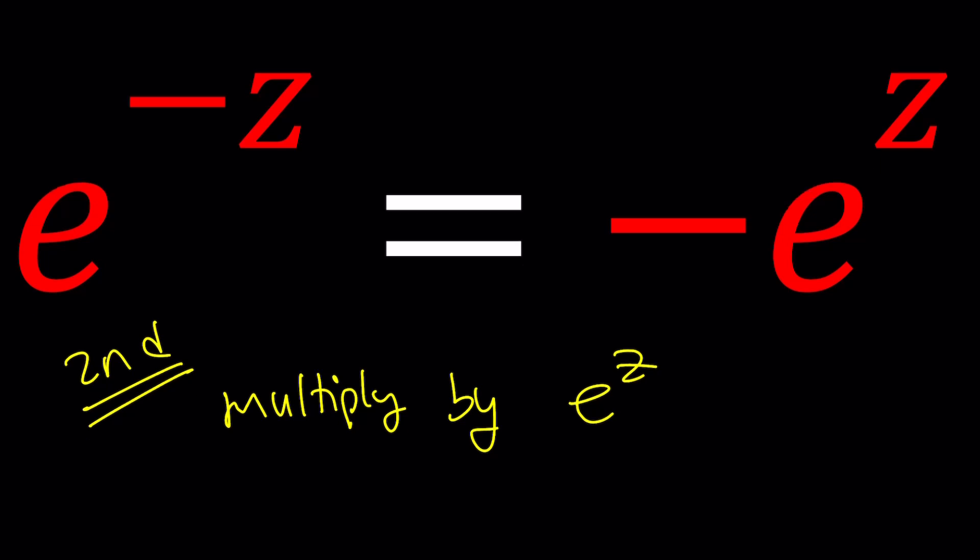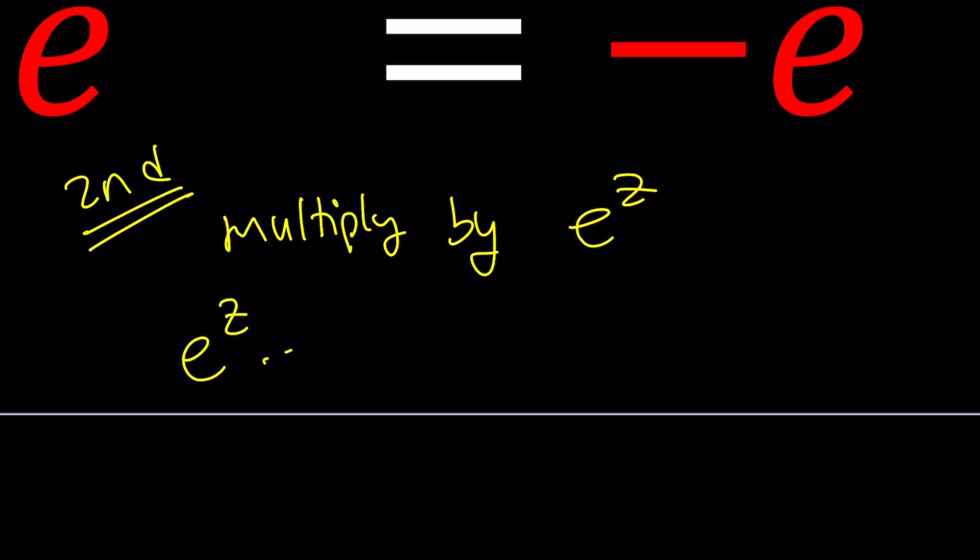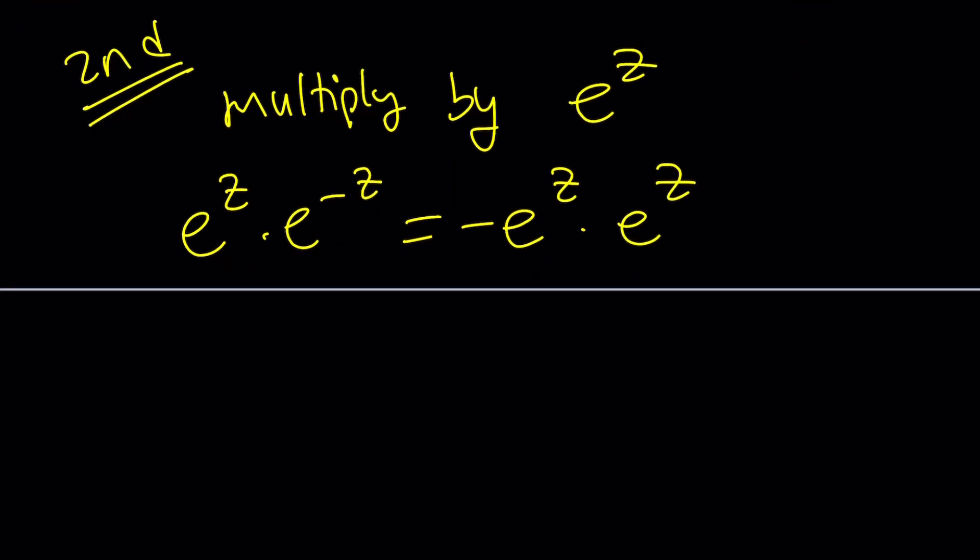So, when you multiply e to the z, e to the negative z, and then negative e to the z times e to the z, you're going to be getting e to the zero on the left, which is one. And on the right, you're going to get negative e to the power of two z. Two z or not two z, that's the problem, right? Now, obviously, we can multiply both sides by e to the z, because e to the z cannot be zero. So, this would be okay.